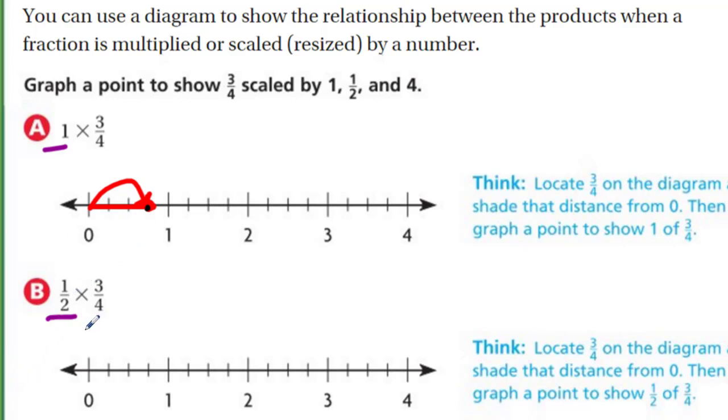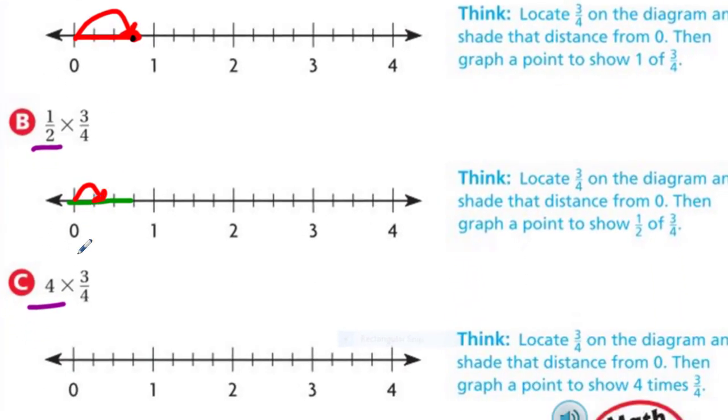Now let's do one half of three quarters. The three quarters, and I'm going to find half of that. Well, half of three quarters, you can see here if we do that, one half, we're going one half the distance. One half of three quarters would be approximately here. It says locate three quarters on the diagram and shade the distance from zero, then graph a point to show one half of three quarters. See how the resizing is going on.